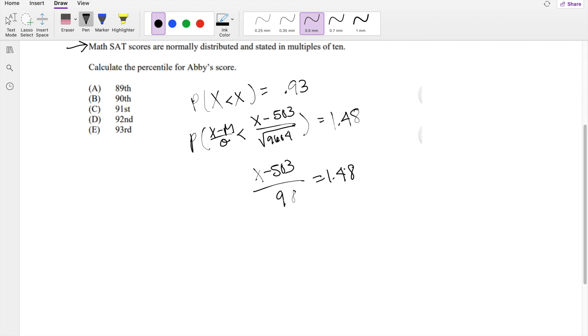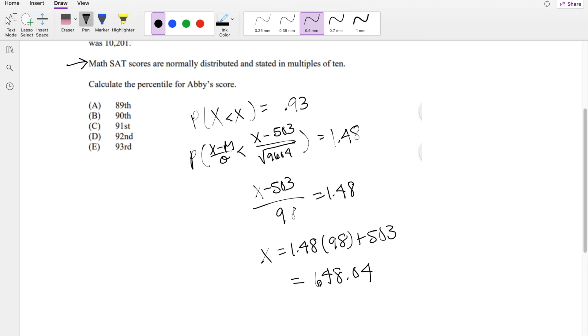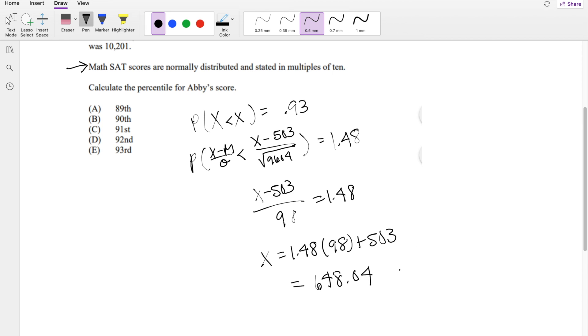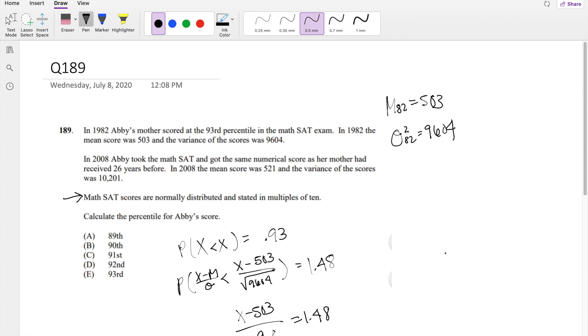So now we're just solving for x like a linear problem. So x is equal to 1.48 times 98 plus 503. So that's equal to 648.04. Because we know that math scores only come in multiples of 10, we can say this is equal to 650. So her mom scored a 650 on her math SAT.